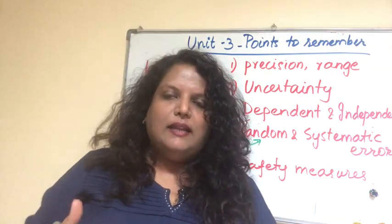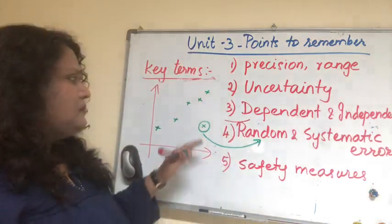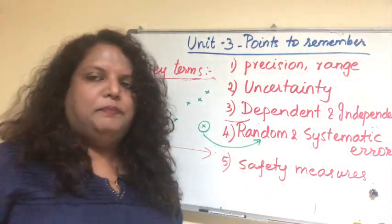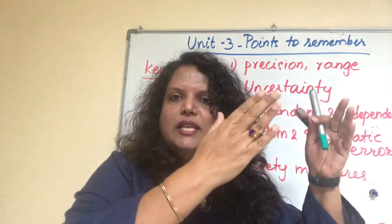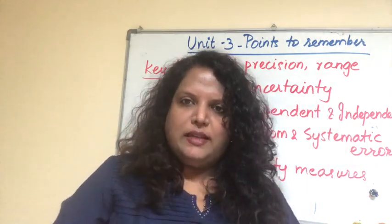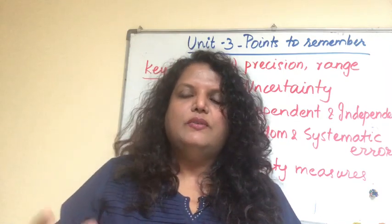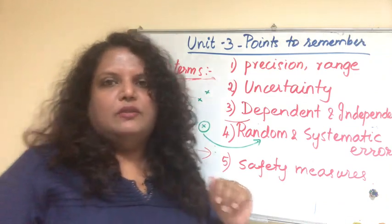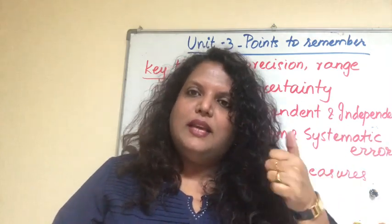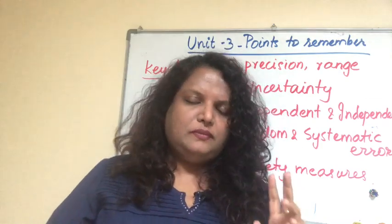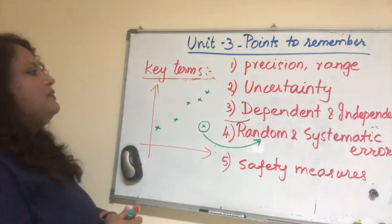A random error identified on the graph cannot be rectified at that point because you've already completed the experiment. So you must plan beforehand to reduce it. If you just take one set of readings you have to rely entirely on those. Instead, take multiple readings — a minimum of two — take repeated readings and then take the average. This will reduce random error. Key term: random error — how to reduce it: take repeated readings and calculate the average.